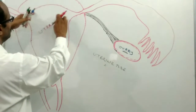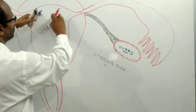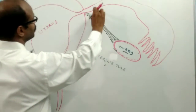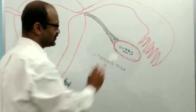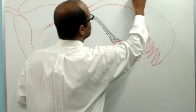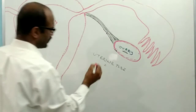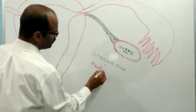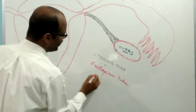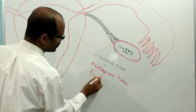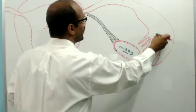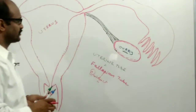On either side of the lateral side, the uterus receives the opening of the fallopian tube. The fallopian tube is also known as oviduct, because it carries the ovum — that's why it is known as the oviduct.